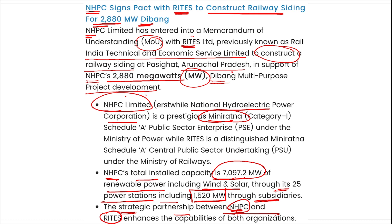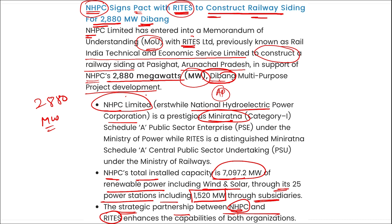The Dibang multi-purpose project is a significant hydropower project undertaken by NHPC Ltd in the Dibang Valley of Arunachal Pradesh. The main aim is to harness the potential of the Dibang River to generate electricity and provide benefits like irrigation, flood control, and water supply. The project's proposed capacity is 2,880 megawatt, making it one of the largest hydropower projects in India.